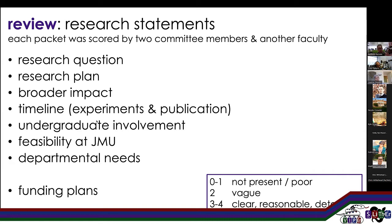We had a spreadsheet where we could just score each candidate on each of these dimensions with a rubric next to us. With the research statements, these were scored by two committee members. The committee divided these up based on generic research area, and we brought in a third faculty member. Most of the faculty in our department did attend hiring training to learn about best practices. For example, the committee did not have a biochemist on it, and we had a number of biochemistry applications, so our biochemistry faculty helped review these. We also made sure that we didn't have three of the same type of chemist reviewing an applicant.